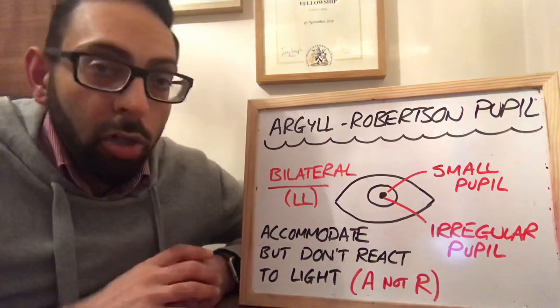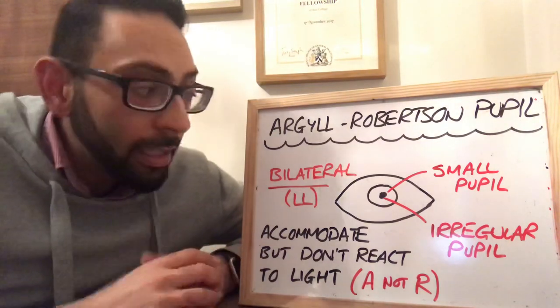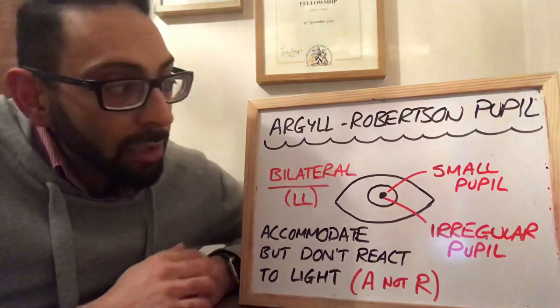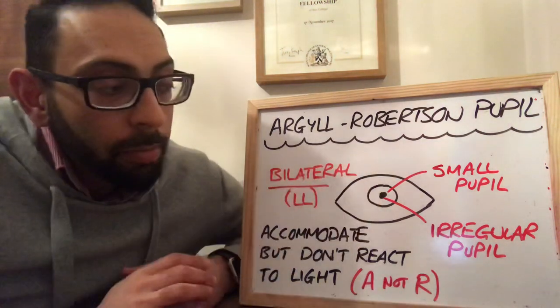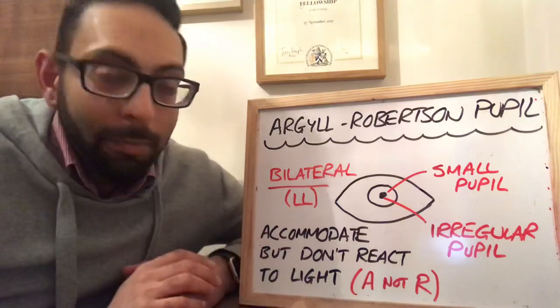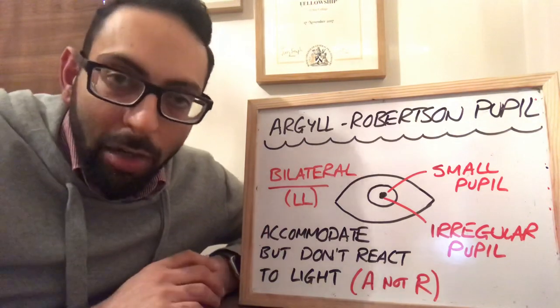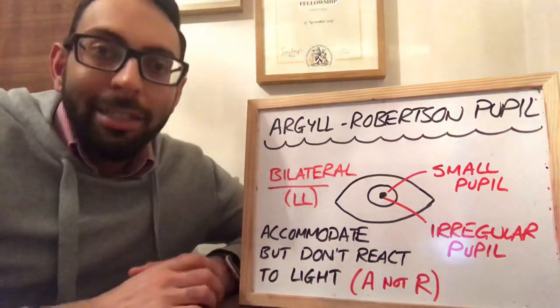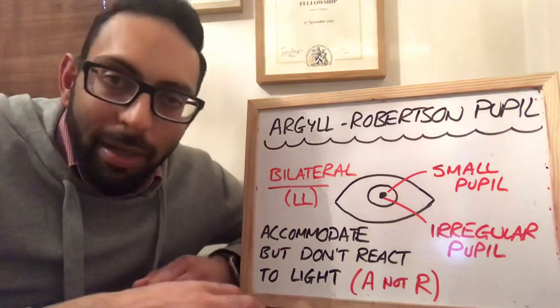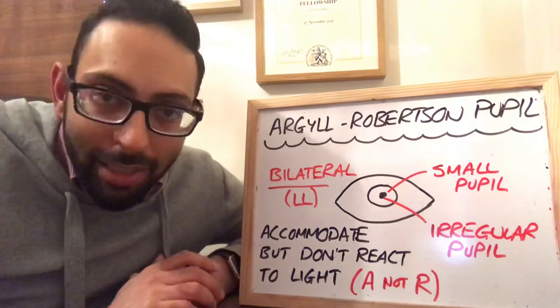The Argyle Robertson pupil is commonly thought about in tertiary syphilis. To summarize: bilateral, small pupil, irregular pupil, accommodates but doesn't react to light. There's much more on ophthalmology on our webinars, our audiobooks, and our courses. Hope this helps.